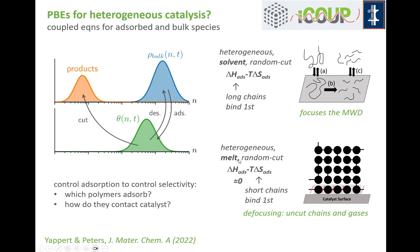Long chains binding first should have the effect of cutting long chains over short chains, focusing the molecular weight distribution. In contrast, if polymers are in the melt, the catalyst is always in contact with polymer segments and doesn't really care whether chains are long or short — adsorption is dominated by entropy. Because polymers give up more entropy to adsorb when long, we should find a larger fraction of short chains near the catalyst surface. Short chains near the surface don't thermodynamically want to leave — they stay and get cut again and again, producing gases before long chains have been digested.